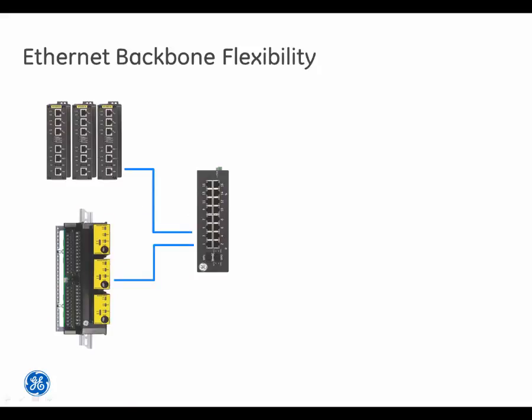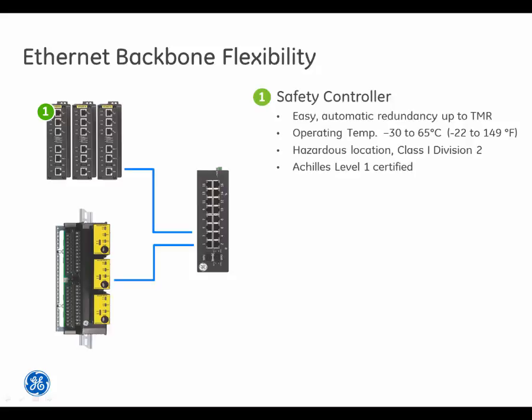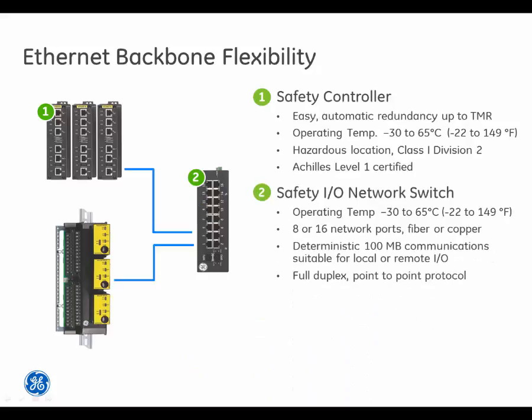The Mark 6ES Control Platform uses a flexible Ethernet backbone. The Safety Controller may be applied for easy, automatic redundancy up to TMR, with a wide operating temperature range, supports hazardous locations, and is Achilles Level 1 certified. The Safety I/O network switch connects to the platform, also with a wide operating temperature range.